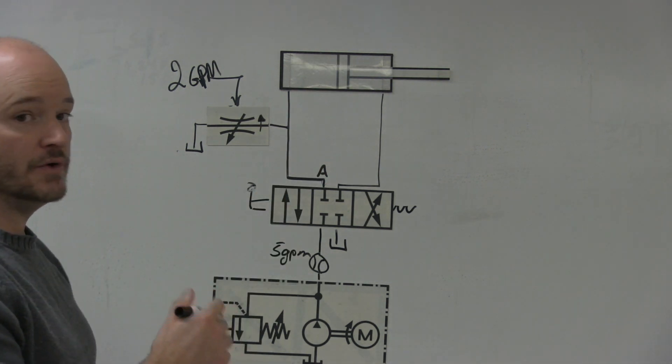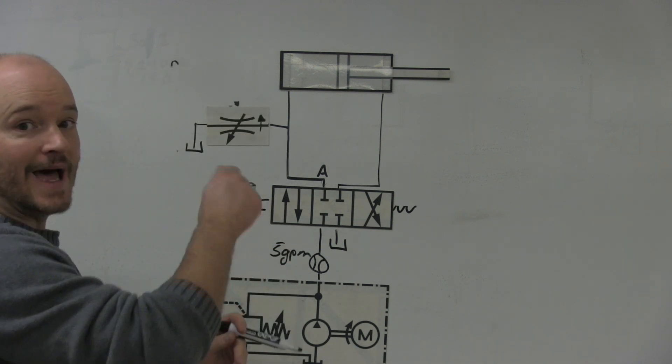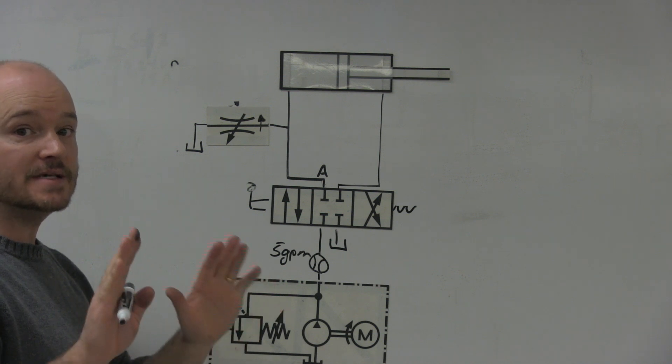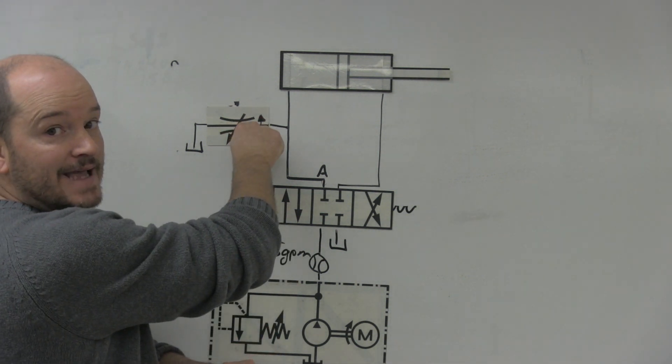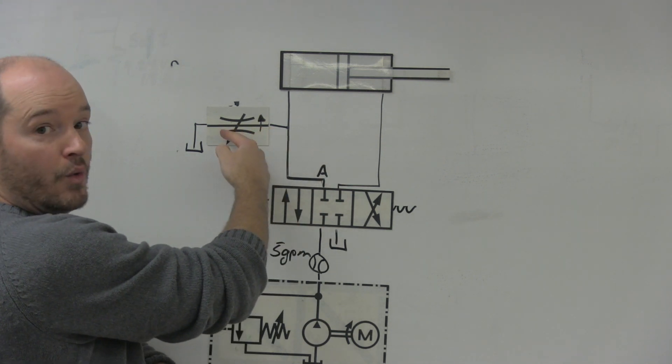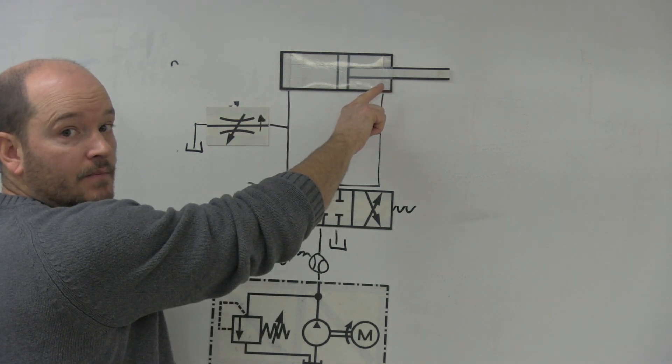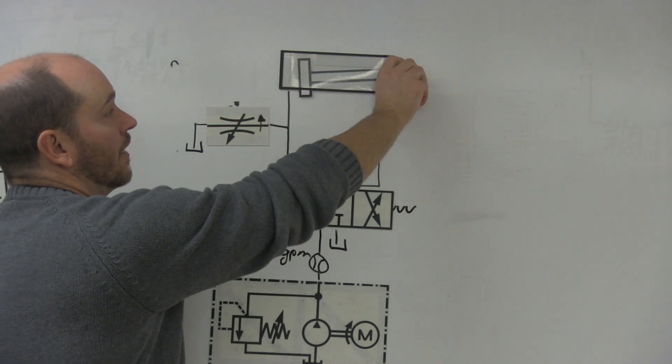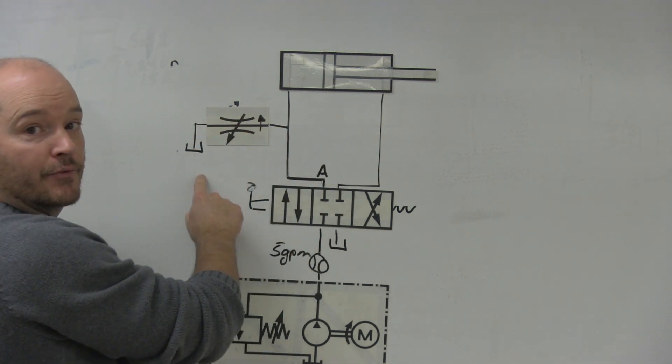Now here's what's weird. Typically when you think about a needle valve or a flow control valve, if you tighten it up, it slows down. But now with the bleed off circuit, this is very different. If I come in here and I start tightening this down, less flow will come through here and more will go to the cylinder. But if I start to open this up, the cylinder will actually slow down because more flow can get through here.